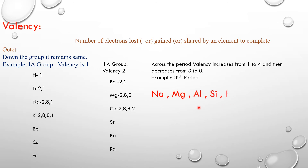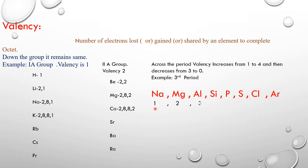The valency of sodium is 1 — it loses 1 electron to get the octet. Magnesium loses 2 electrons, so its valency is 2. Aluminum has valency 3, silicon has valency 4 — so valency increased from 1 to 4. Then phosphorus has valency 3, sulfur has valency 2, chlorine has valency 1, and argon has valency 0 because it is an inert gas. So across the period, valency increases from 1 to 4, then decreases from 3 to 0.